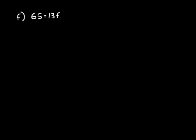Let's do a few more. Look at this problem: 65 equals 13f, which means 13 times f. So you're saying 13 times what equals 65? Maybe you already know that 13 times 5 equals 65. If this is confusing because the product is on the left side instead of the right side, it doesn't matter — you still do it the same way. We make it a division problem: 13 goes into 65 how many times? That's 5 times, so f equals 5.